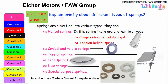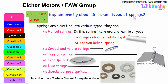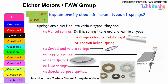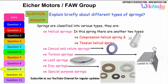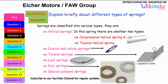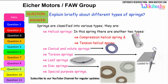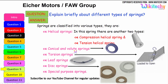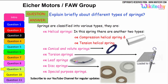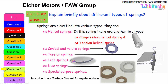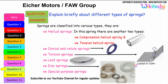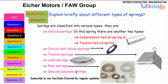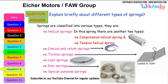Let us see briefly the different types of springs. Springs are classified into various types: the first one is helical springs, which have two further types — compression helical spring and tension helical spring. The next one is conical volume springs. Then torsion springs, leaf springs, and disk springs. There are also some additional springs called special purpose springs. These are the different types of springs available.